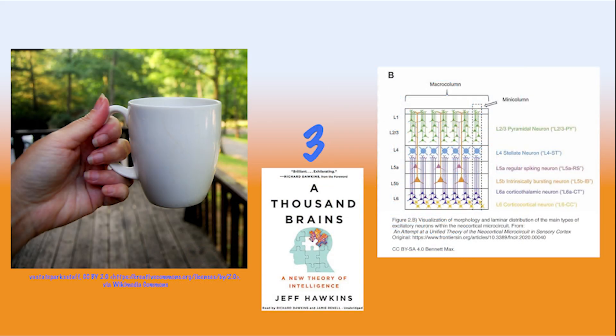At 3rd place is Jeff Hawkins' A Thousand Brains, A New Theory of Intelligence. This book explores possible mechanisms for doing spatial transforms from one relative axis set to another. For example,